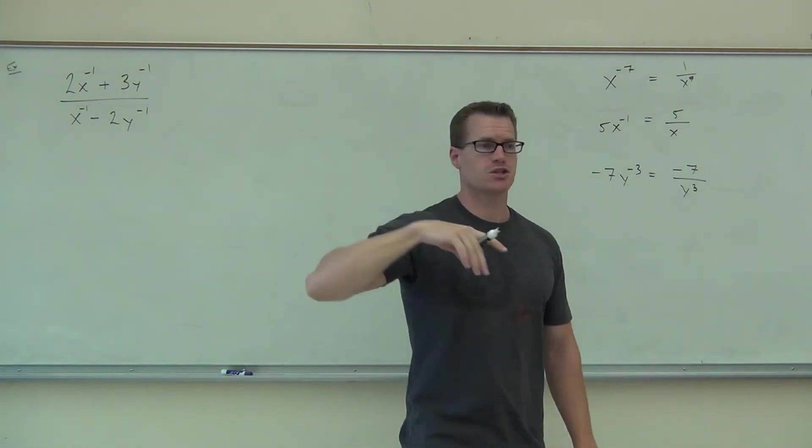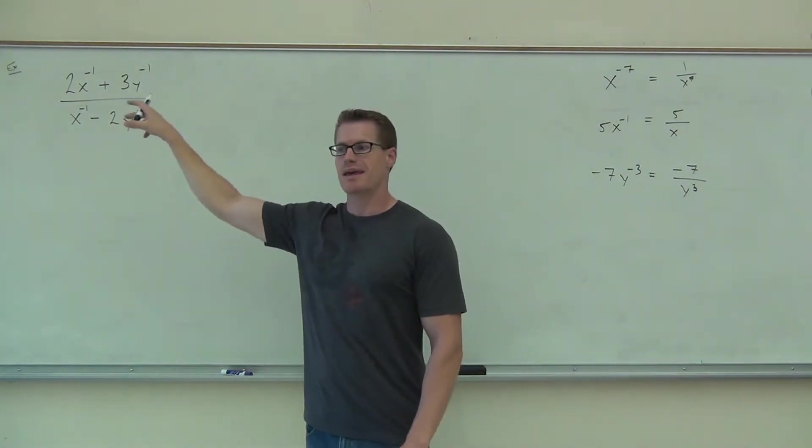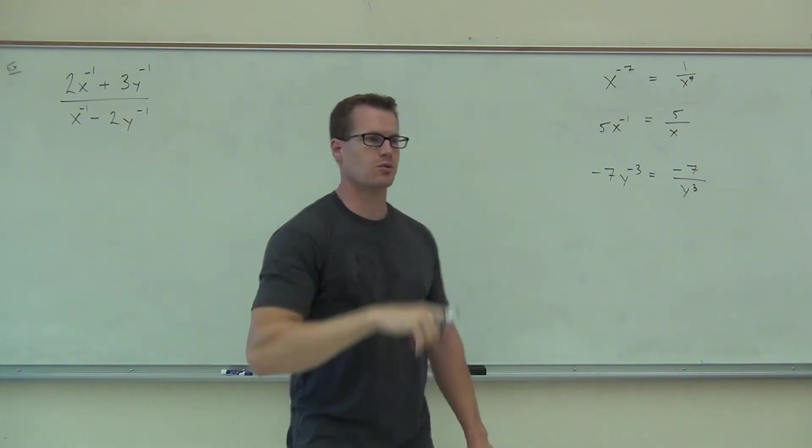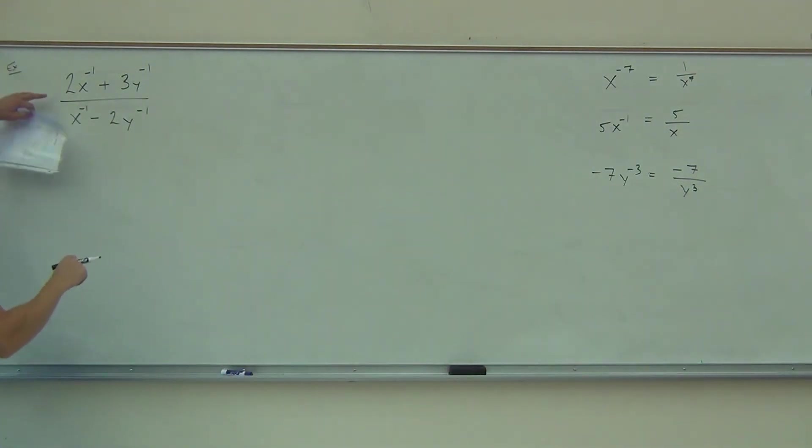So let's apply what we just learned to this thing. Can we get rid of negative exponents? We're just going to do it term by term. So let's all look at this together. What does 2X to the negative one become, please? 2 over X. Perfect.